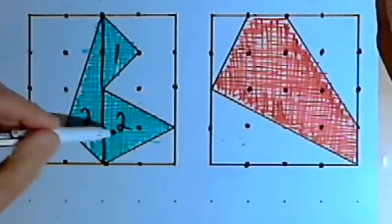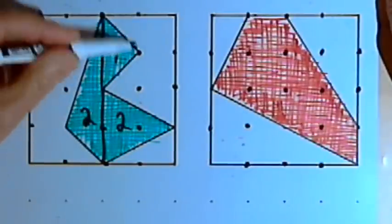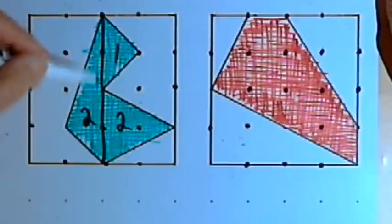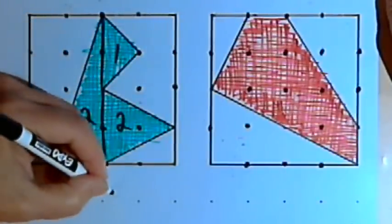Now I just have to add the areas of those three triangles together. 2 plus 2 is 4, plus 1 is 5. That tells me the area for the entire irregular polygon is 5 square inches.